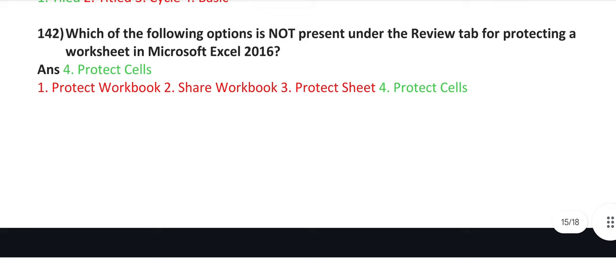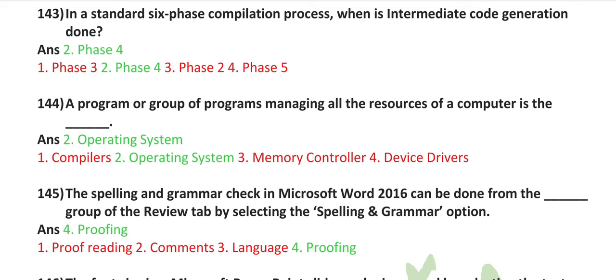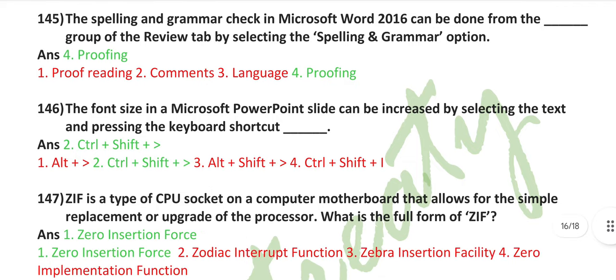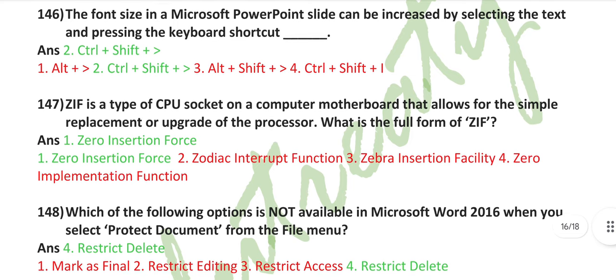Which of the following options is not present under the review tab for protecting a worksheet in Microsoft Excel 2016? Protect shell. In a standard six-phase compilation process, when is intermediate code generation done? Phase 4. A program or group of programs managing all the resources of a computer is the operating system. The spelling and grammar check in Microsoft Word 2016 can be done from the proofing group of the review tab by selecting the spelling and grammar option.